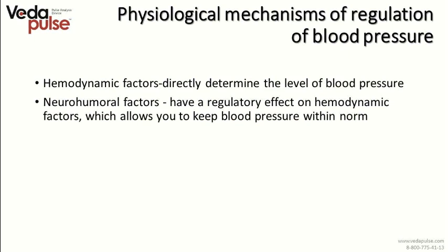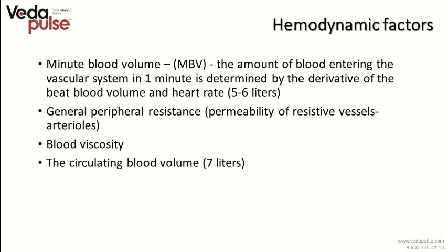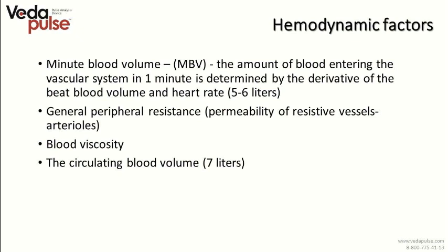Physiological mechanism of regulation of blood pressure: hemodynamic factors directly determine the level of blood pressure, while neurohumoral factors have a regulatory effect on hemodynamic factors, keeping blood pressure within normal range. The main hemodynamic factor is minute blood volume — the amount of blood entering the vascular system in one minute — determined by the derivative of beat blood volume and heart rate. Another hemodynamic factor is general peripheral resistance or permeability of resistive vessels, arterioles. Next are blood viscosity and circulating blood volume.